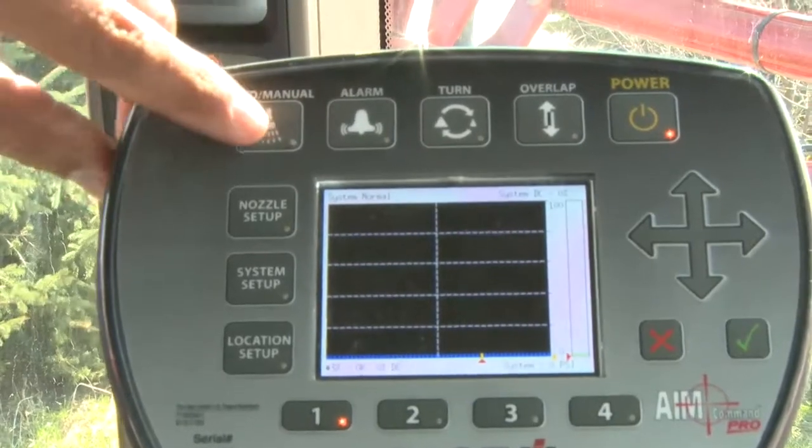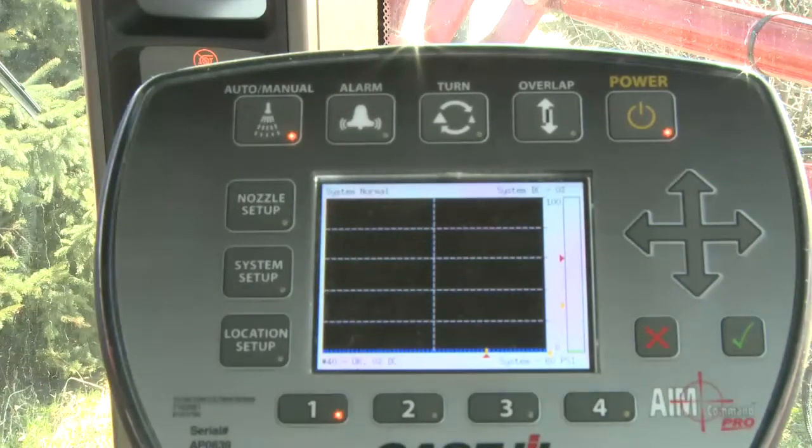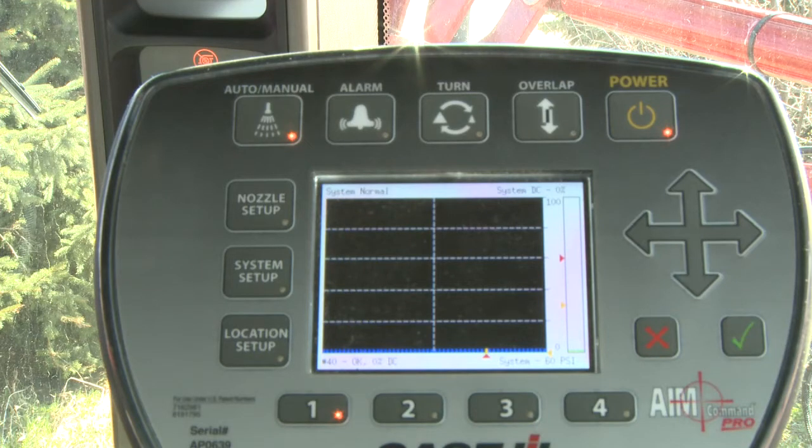Once we've turned the pump on, we can use the auto manual switch in the top left corner of the ProView display to enable automatic pressure control.